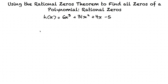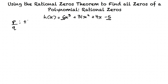Let's start with the Rational Zeros Theorem. In the Rational Zeros Theorem, the zeros of a polynomial can be written as p over q, where p represents all the factors of the constant term and q represents all the factors of the leading coefficient. The constant term is negative 5 and the leading coefficient is 6. So we'll write down all the factors of the constant term negative 5 first: plus or minus 1 and plus or minus 5.